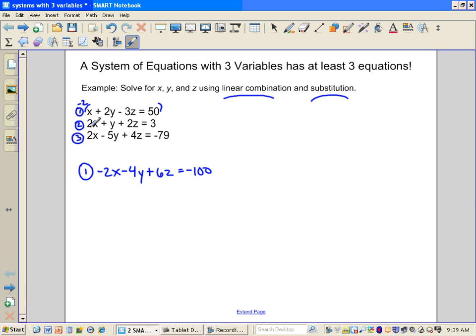Then I'm just going to rewrite the second equation, 2x plus y plus 2z is equal to 3. And I'm just going to then eliminate the x's. That leaves me with negative 4y plus y is negative 3y plus 8z is equal to negative 97. That was equation one and equation two.